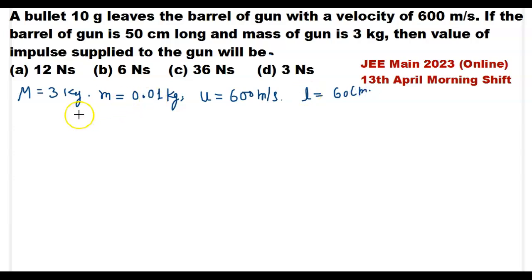By law of conservation of momentum, we know that initial momentum is equal to final momentum. That means momentum of gun and bullet system before firing is equal to momentum of bullet plus momentum of gun.